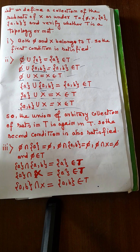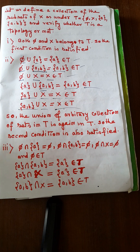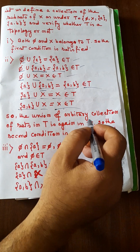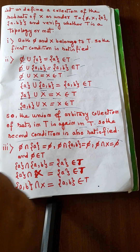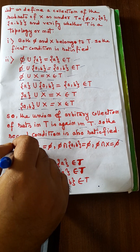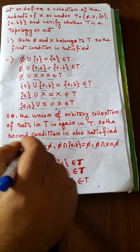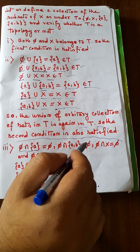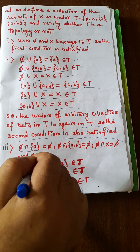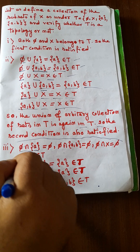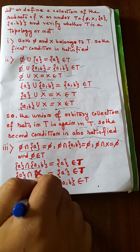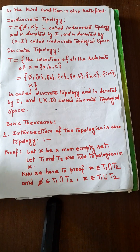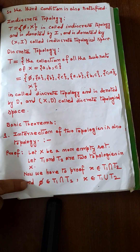You should have good, deep knowledge of sets to understand this — at least the knowledge provided in the set theory video. So the union of an arbitrary collection of sets in T is again in T; the second condition is satisfied. For intersections: φ∩A = φ, φ∩AB = φ, φ∩X = φ — all give φ, which belongs to T. A∩AB = A, A∩X = A, AB∩X = AB — all belong to T. So the third condition is also satisfied.